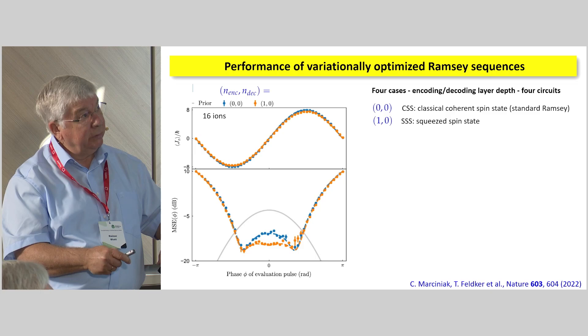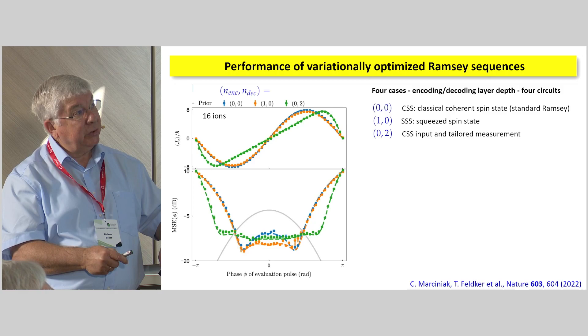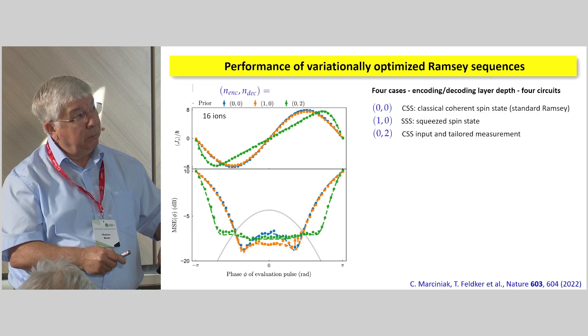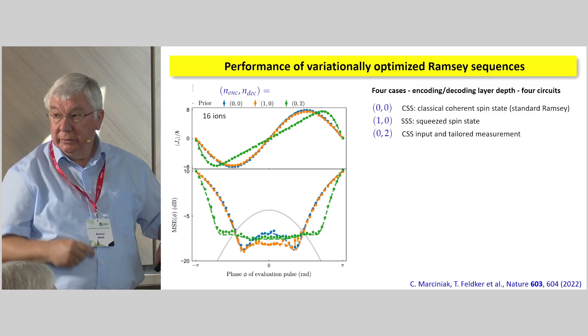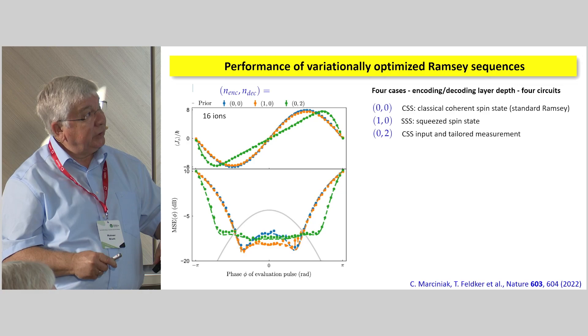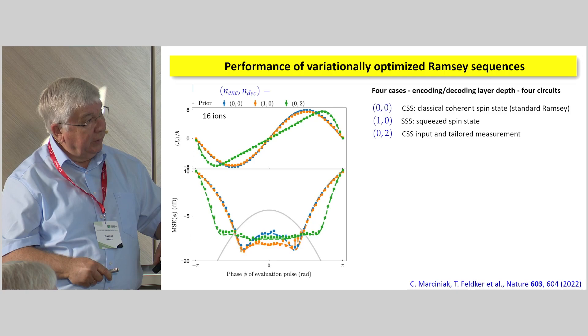But now we can just do better. We can say, okay, let's just start with a coherent spin state as an input, as a pi/2 pulse as an input. But we want now a tailored measurement. We just make the measurement according to the system at hand. Can we do better? First thing that we can do better is the so-called catching range, which is used to stabilize the interferometer. But the error is only slightly better than the original one. It's worse than for the spin-squeezed one.